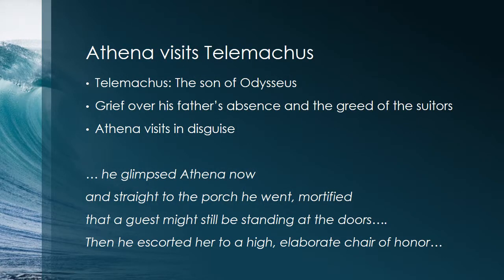Athena goes to Ithaca and visits Odysseus's son Telemachus, who has been consumed with grief for years because of his father's long absence. He presumes Odysseus is dead, and also because of the suitors who have besieged his palace for years pursuing his mother Penelope — attempting to get her to marry one of them while eating all his food and spending his money. Athena comes in disguise as a great male warrior, and we see Telemachus pay his due deference to this visitor, escorting her immediately to a high, elaborate chair of honor.